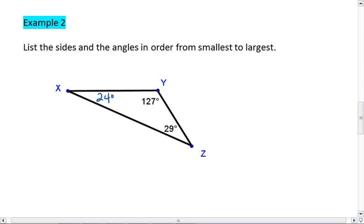Because we're given angle measures, let's start with those. For our angles, our smallest is the measure of angle X, which is 24. That's less than the measure of angle Z, which is less than the measure of angle Y.